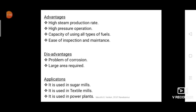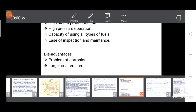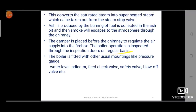The applications of the Babcock and Wilcox boiler include sugar mills, textile mills, and power plants — particularly thermal power stations.